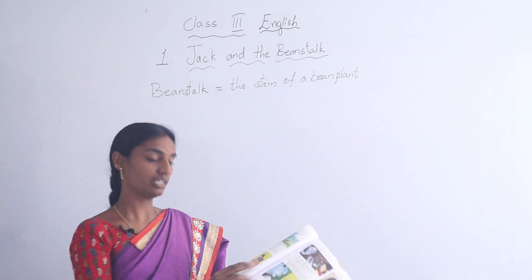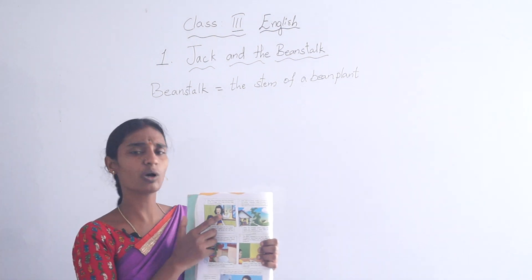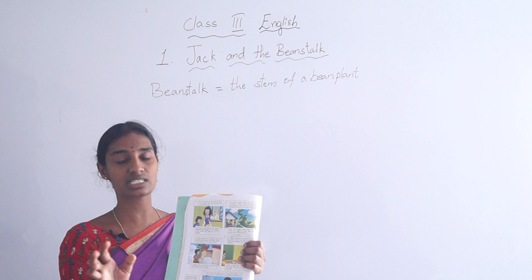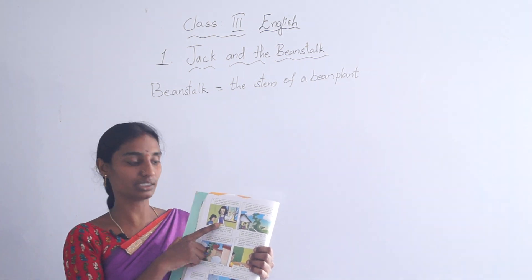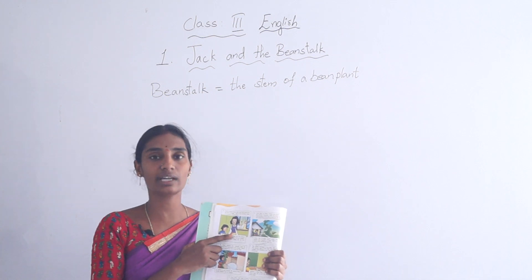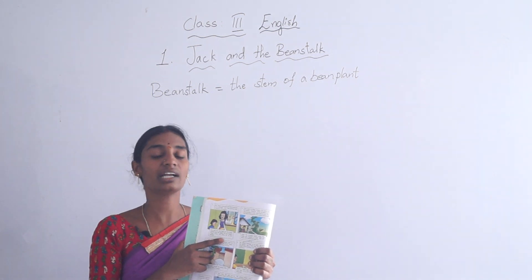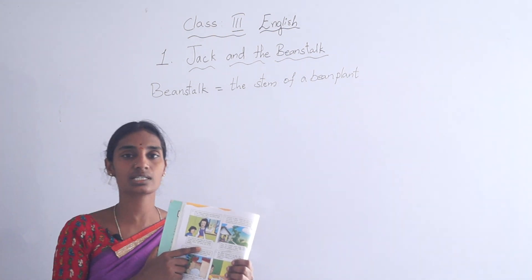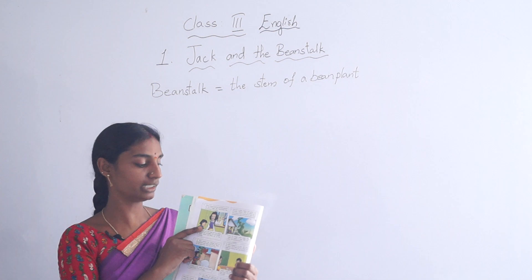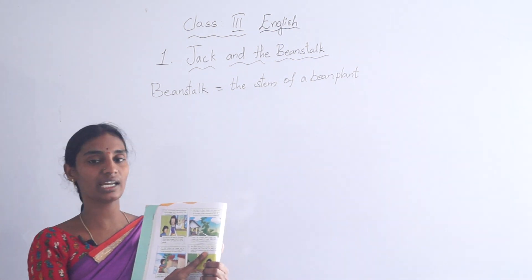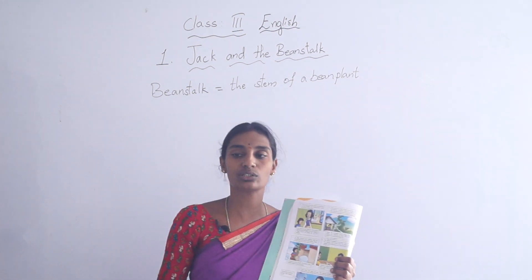Children, now open the next page — page six. Here you can see: the boy sold the cow for five beans and brought the five beans home. Now the boy gave the five beans to his mother. His mother was very angry. Why is she angry? Because a cow is worth much more money, and this boy sold that cow for five beans. She is scolding Jack. Jack felt very bad and he went to sleep that night. His mother took those beans and threw them out of the window.